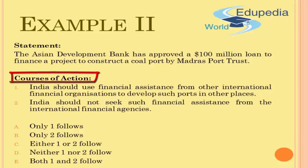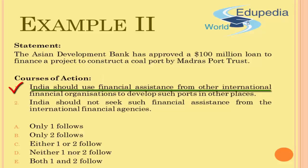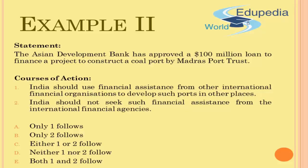A couple of courses of action have been suggested about what to do in future. Number one: India should use financial assistance from other international financial organizations to develop such ports in other places. Since India has secured financing from the Asian Development Bank, they should also approach other banks to get financing for other such projects in other ports. There seems to be nothing wrong with this course of action — it's a suggestion without drawbacks, so it's a valid course of action.